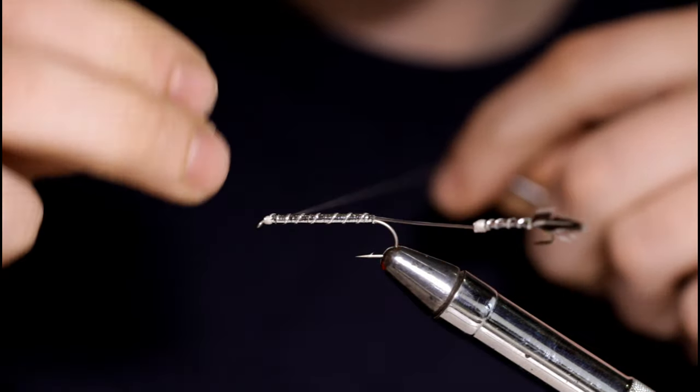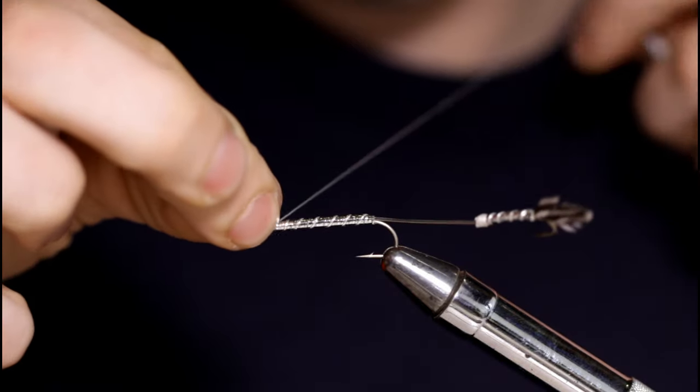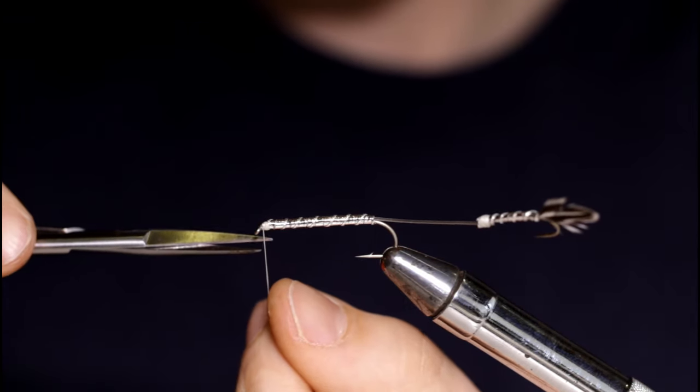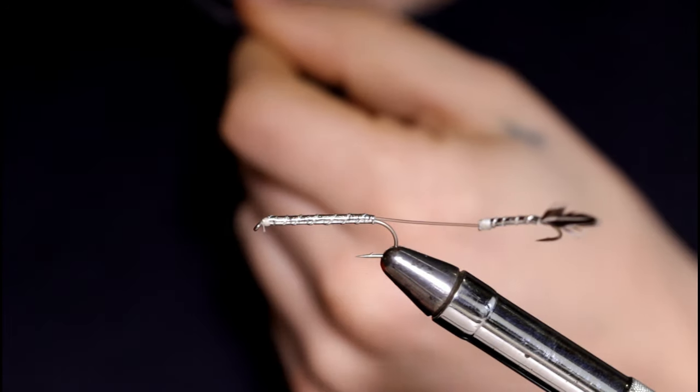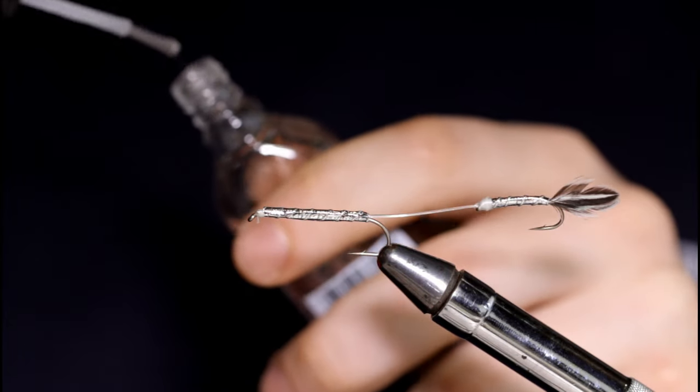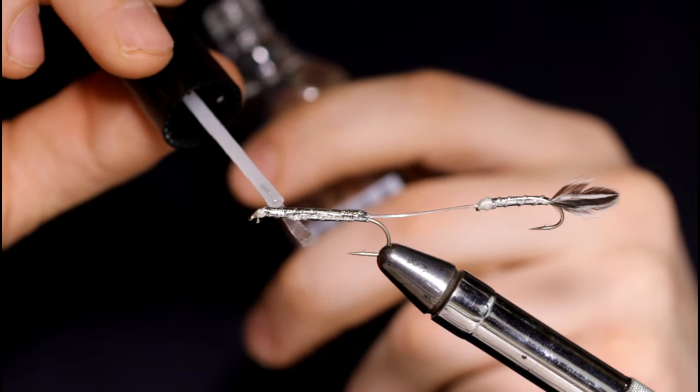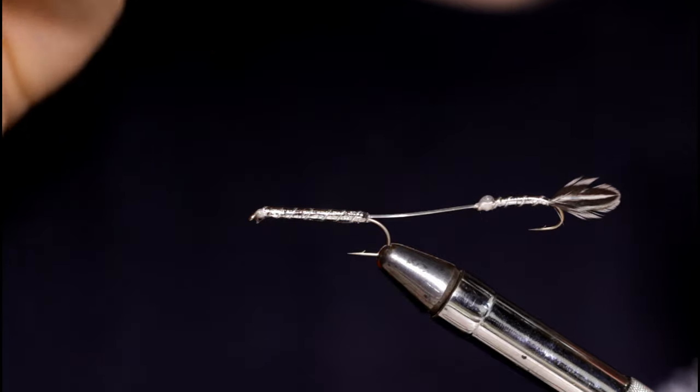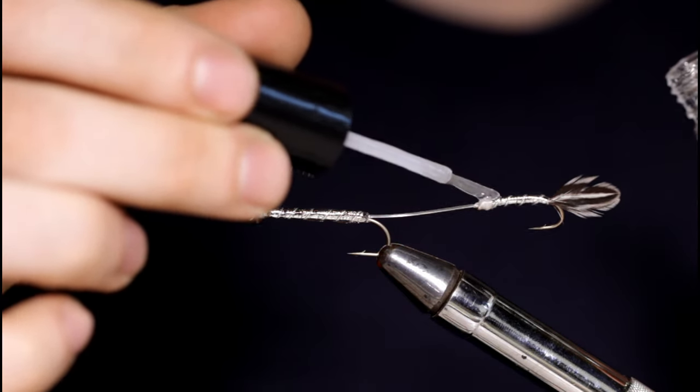So I'll snip this off before I switch threads. Now's a great time to make sure that your rear hook is properly head cemented. I like to go ahead and coat the whole entire body with two coats of Sally Hansen's. I feel that doubles the durability of these flies.